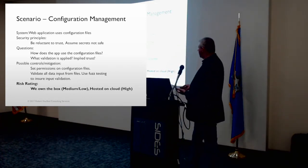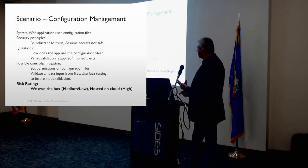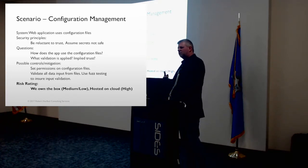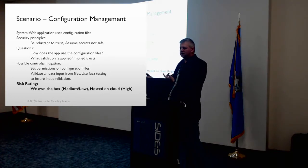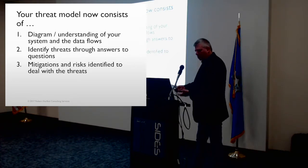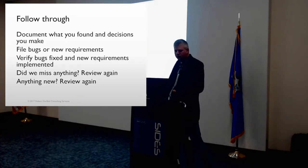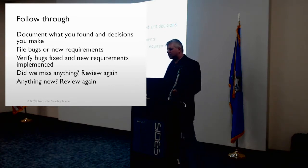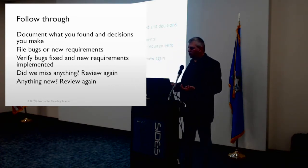That's a threat model right there — we know the system, we know some principles, we've asked questions, identified threats that could happen if somebody changes a config file, identified mitigations, and determined the risk. That helps drive what we do next: do we put these controls in place, or do we acknowledge the risk and accept it? Finally, the follow-through is documenting what you found, filing bugs or requirements, verifying they're fixed, and if anything was missed, reviewing again.